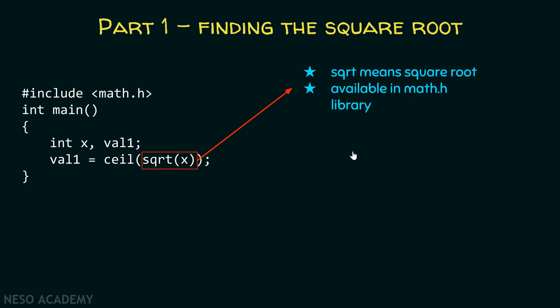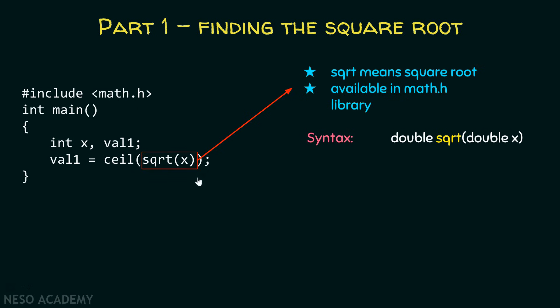The syntax of the sqrt function is that it accepts a double value and returns a double value. You might ask: here we are providing an integer value, but the syntax says we need to provide a double value — is that not violating the syntax? It is not violating the syntax at all, because from integer to double there is no loss in precision. Therefore, the compiler will do implicit conversion. The integer will get converted to double implicitly, so it is completely legal. Apart from the sqrt function, we also need to understand the ceil function. The ceil function returns the smallest integer greater than or equal to x, and it is also available in the math.h library.